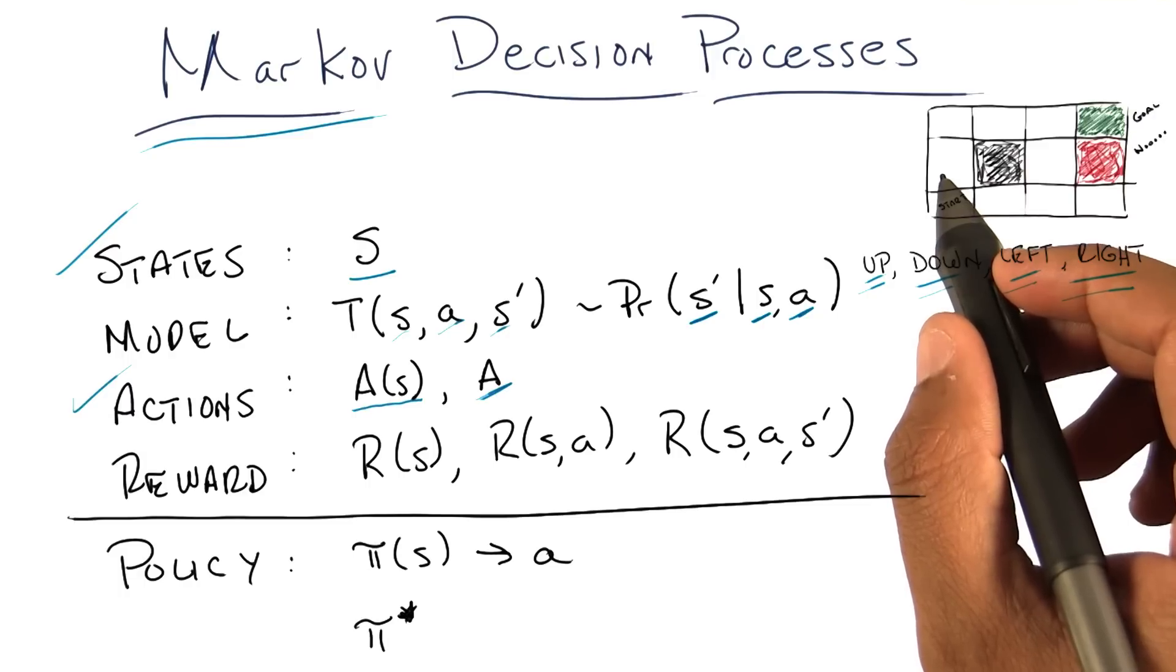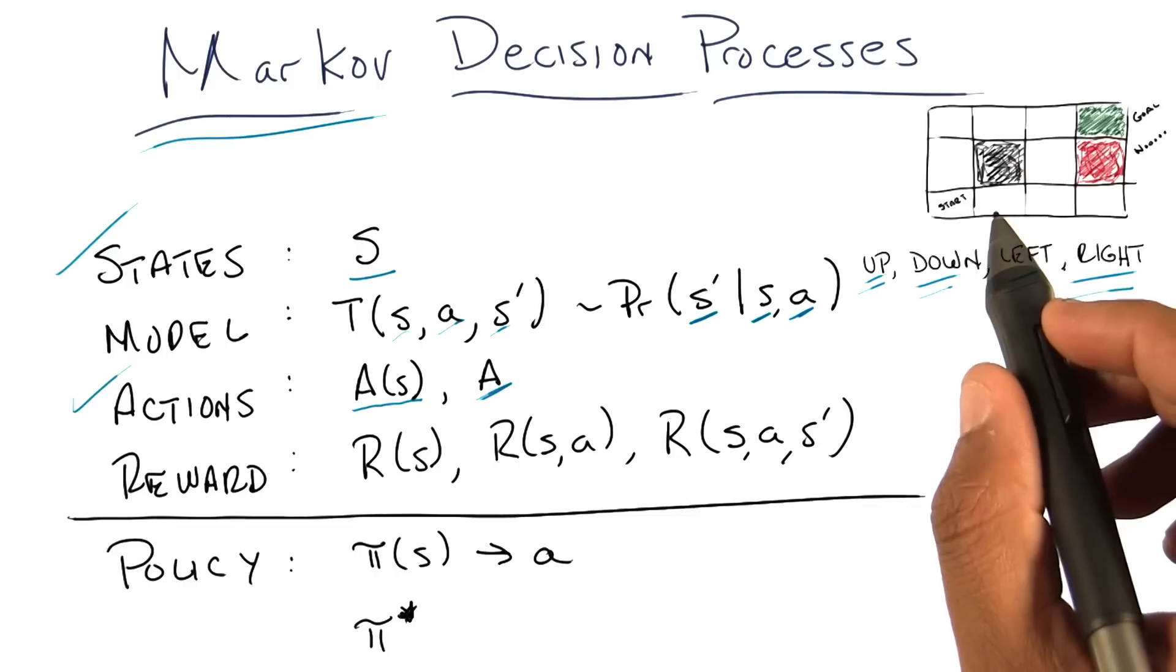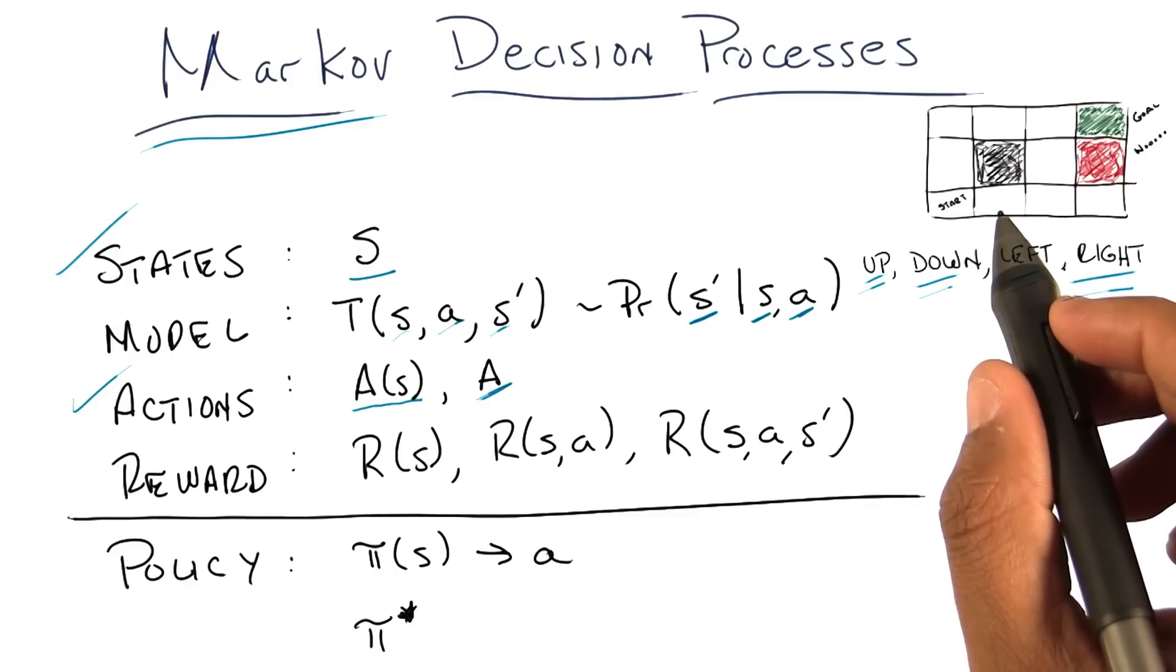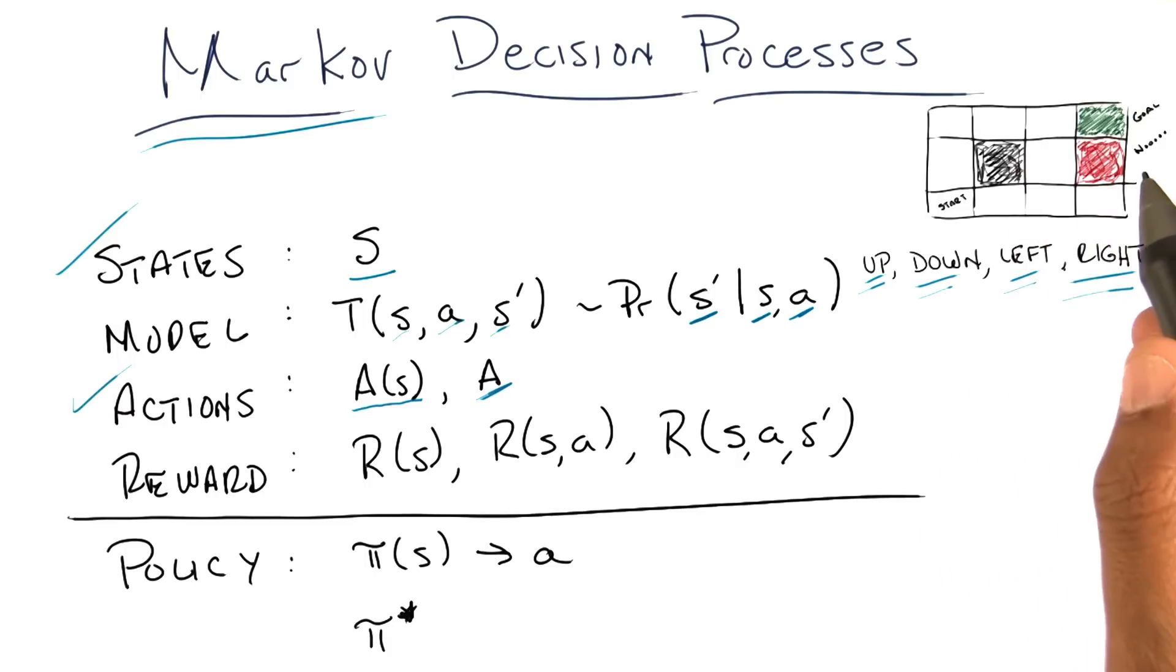No, when we first started in the deterministic world. Oh, that was probability one. Right, and what would be the probability you ended up in the state to the right? Probability zero. Right. In fact, the probability that you end up in any of the other states is zero in the deterministic world.